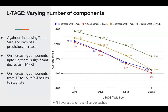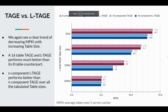Comparing TAGE and LTAGE directly, on increasing table size the MPKI decreases significantly. Within each table size, LTAGE performs better than TAGE because of its loop prediction abilities. We also see that the 16-component configuration performs better than the 8-component configuration.